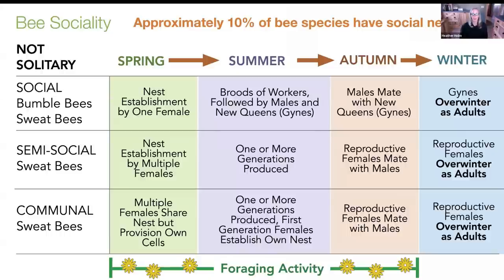I wanted to start off by talking about the sociality of bees. With 3,600 species occurring in the US and Canada, they all have different nesting strategies. The vast majority of bees have solitary nests, but we do have some bees that are social. Besides the introduced honeybee, which is a highly social species, we do have native bees with social nests. A social colony — whether it's a bumblebee or a species of sweat bee — is active throughout the growing season, so our social bees need a continuous succession of flowering plants.